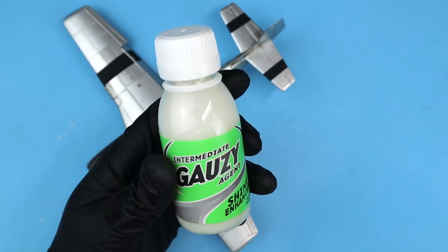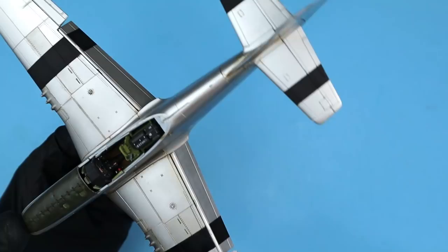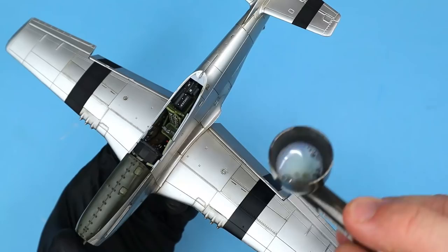In preparation for adding the panel line wash and decals I airbrushed a light coat of AK's Real glossy over the entire model surface.